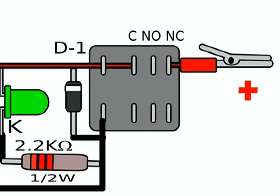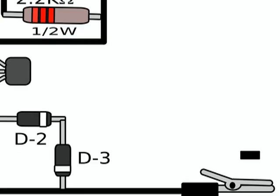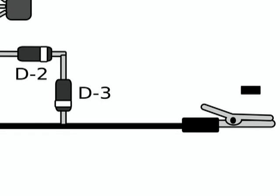You can install alligator clips at the outlet of the charger, a red one for the positive and a black one for the negative.